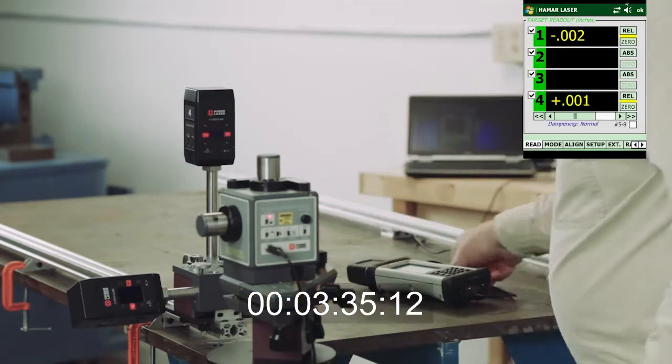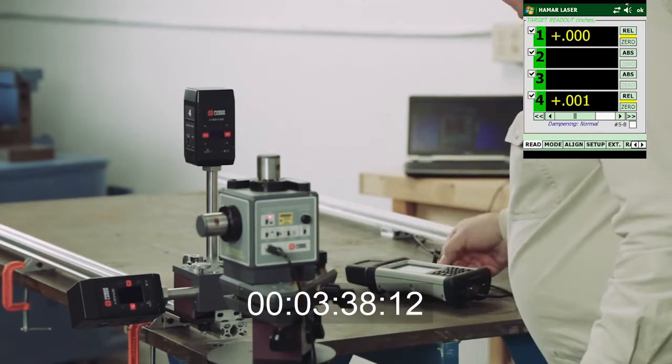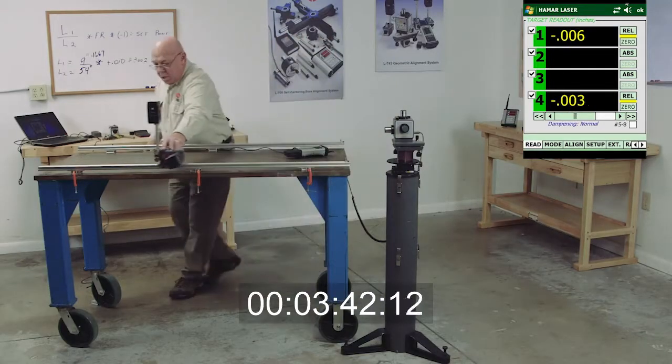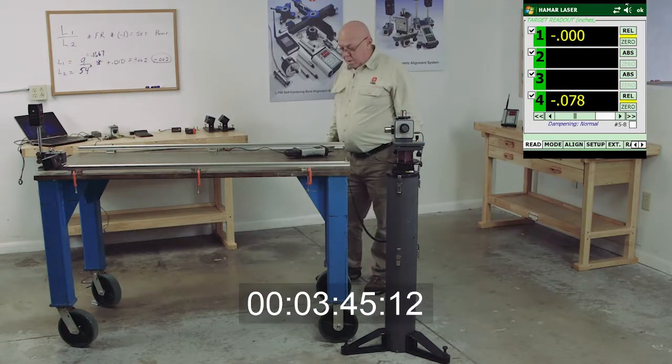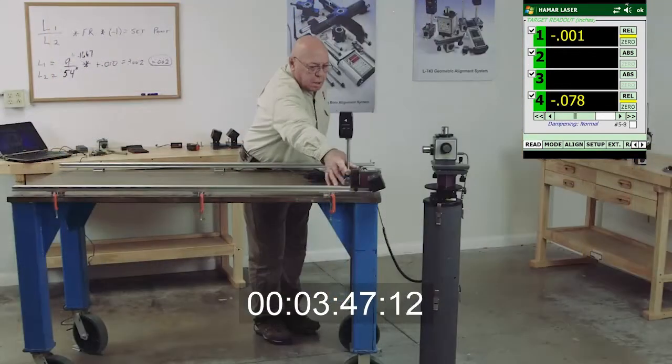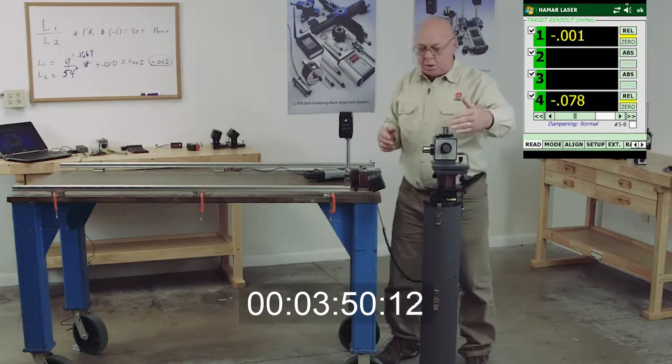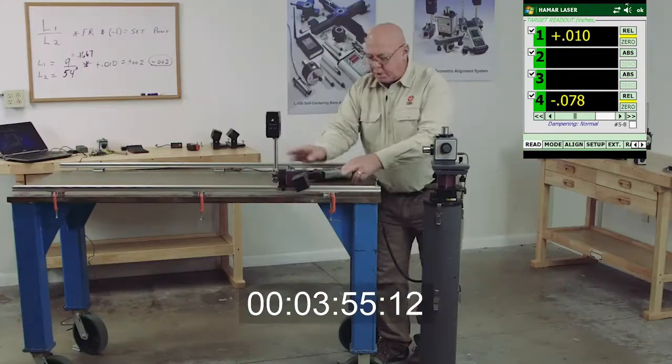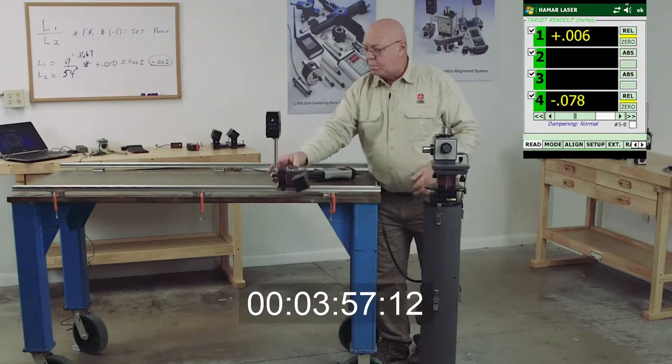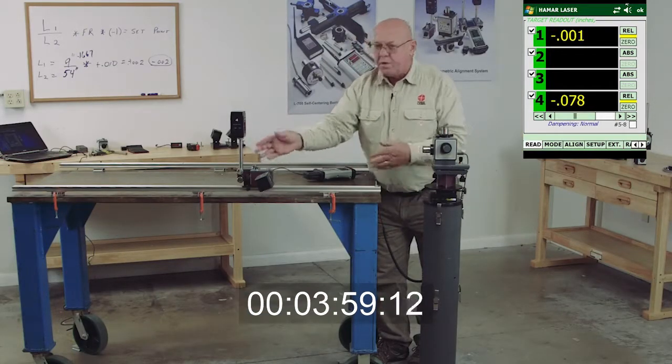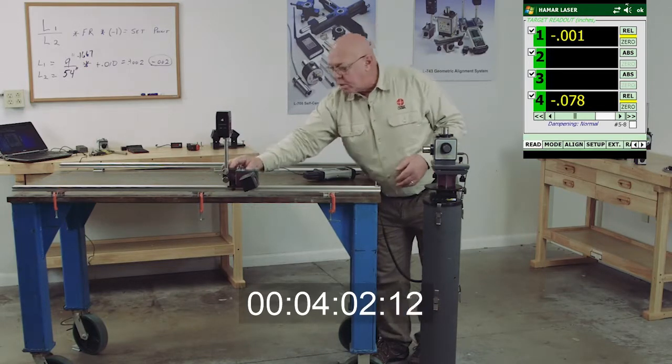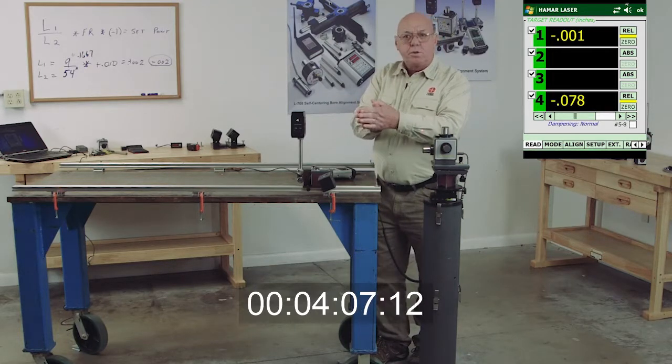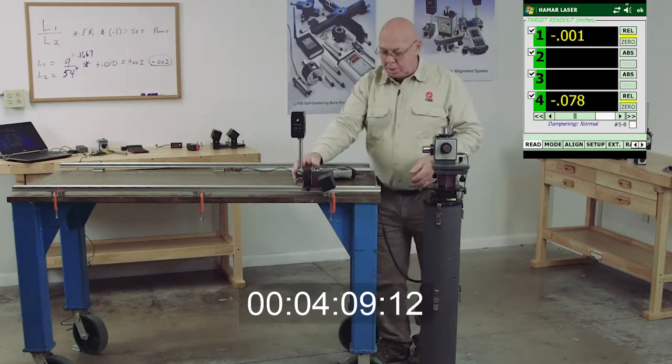I want to double check my numbers. Make sure I'm still zero. And I'm zero. And now, because I know this is parallel to this rail, we can actually move this over the top of each leveler or each adjustment. And we could physically make adjustments to bring this to zero all the way down. So we're actually leveling the rail and we're actually straightening the rail at the same time.